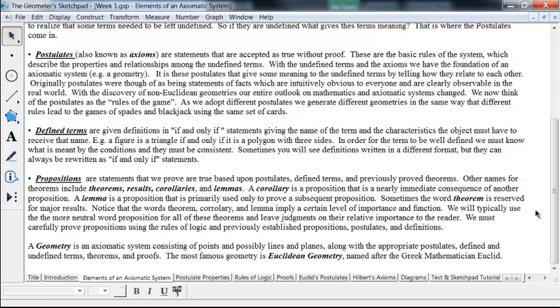And there are other names for propositions. They include theorems, results, corollaries, and lemmas. Some of these things have a value judgment associated with them. For example, a corollary is a proposition that's a nearly immediate consequence of another proposition. A lemma is a proposition that's primarily used only to prove a subsequent proposition. It's not really important in and of itself. You sort of take a key step of a proof and shove it out to a separate proposition; you call that a lemma. And then, if we're using these words, we would also often use the word theorem to reserve for a big result. For example, in my dissertation, there's basically two big theorems. The rest are all called just propositions.